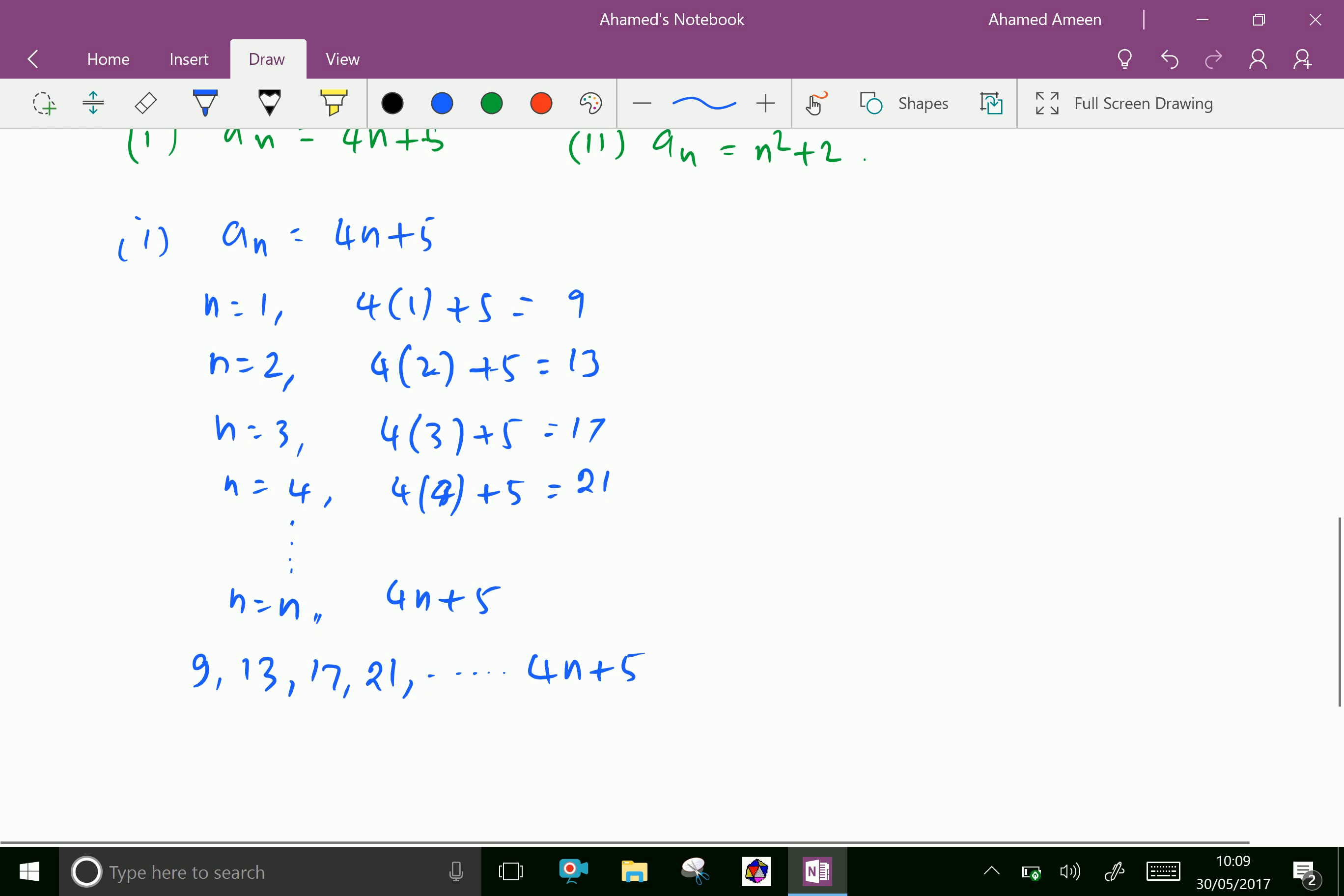The second one. a_n equal to n squared plus 2. n equals 1. We get 1 squared plus 2. 1 squared is 1 plus 2 is 3. n equals 2. 2 squared is 4. 4 plus 2 is 6. n equals 3. 3 squared plus 2 is 9 plus 2 is 11.